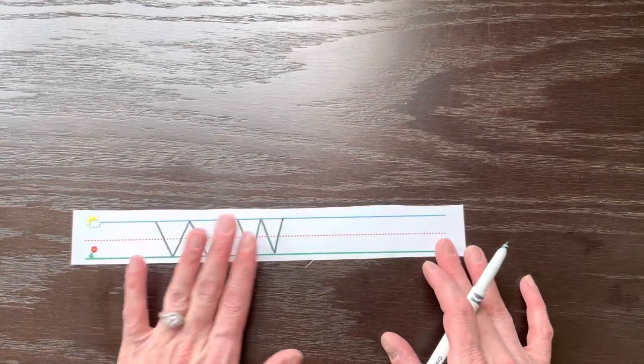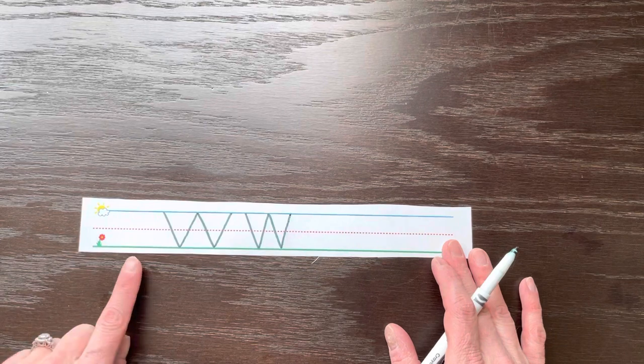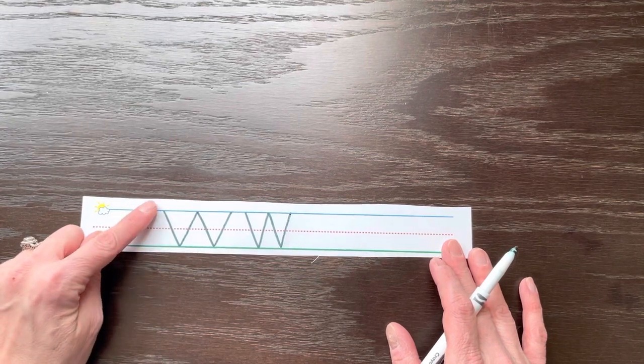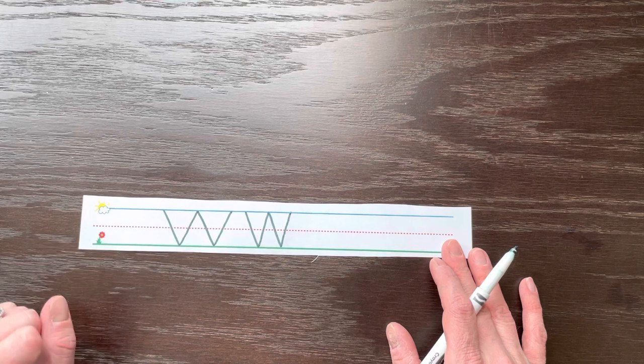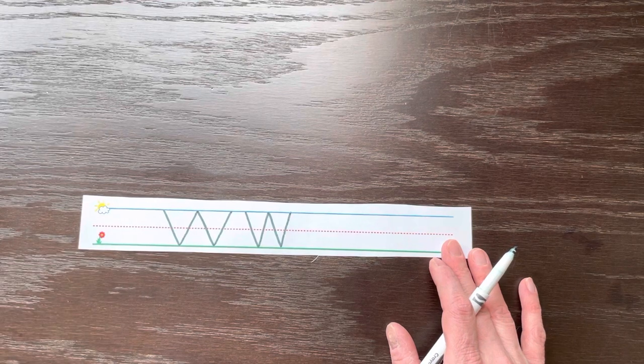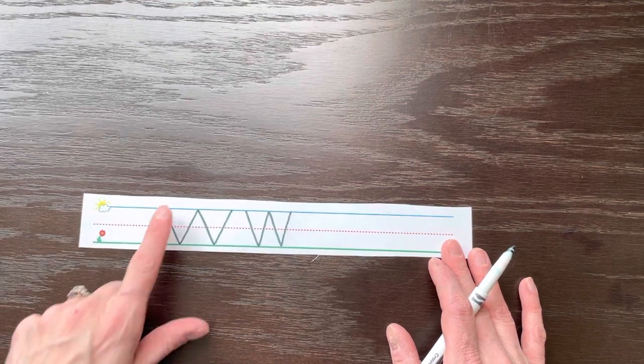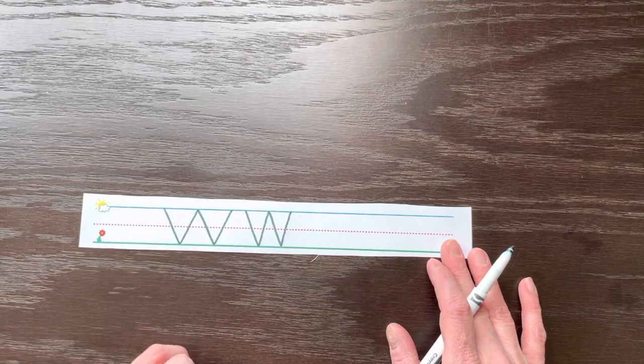Remember we never pick up our pencil when we're doing W and it's very important to start at the top. All capital letters start at the top. If you don't start at the top you're going to end up with a letter that looks kind of like an M because if you go from the bottom up down up down it will look different. So always start at the top.